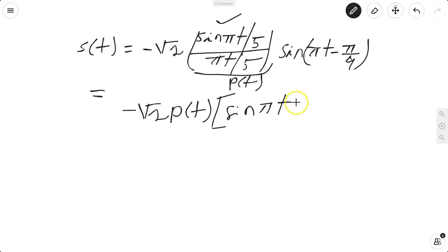This equals -√2 p(t) [sin(πt)cos(π/4) minus cos(πt)sin(π/4)]. Cos(π/4) is 1/√2.